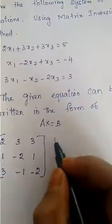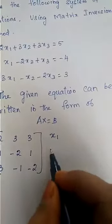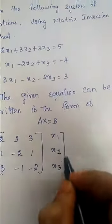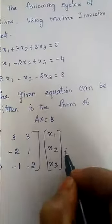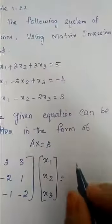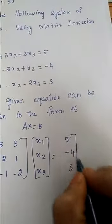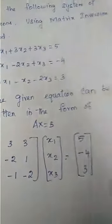What are the variables? x1, x2, x3. You have to write these in the column x1, x2, x3. The next one we have constants 5, minus 4, and 3, that is your B.